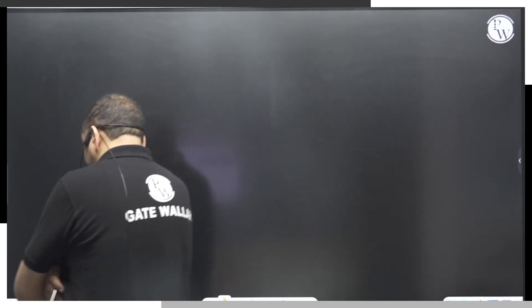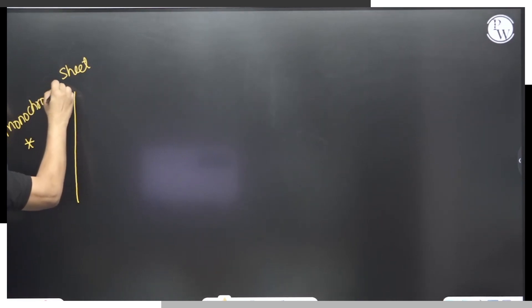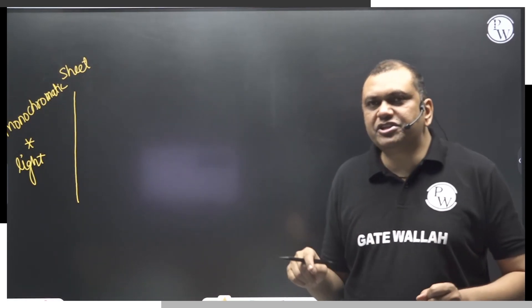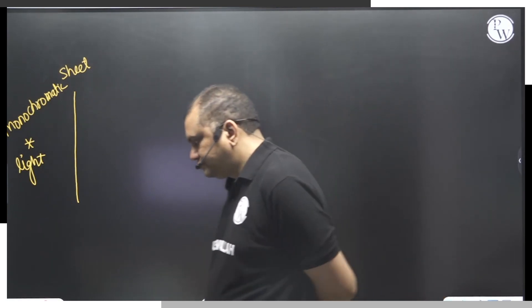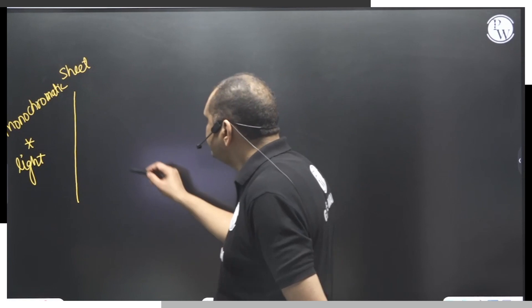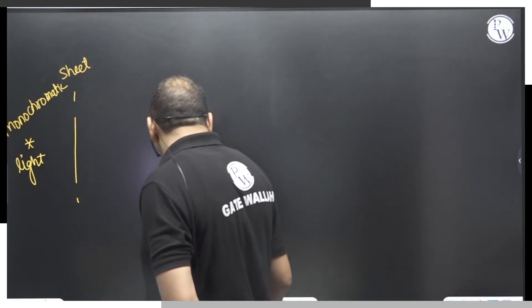In 10 to 15 minutes I am going to teach you the fundamental concepts of light. There is one sheet, and on this side of the sheet there is a source of monochromatic light. Monochromatic light is light which emits radiation of a single wavelength.